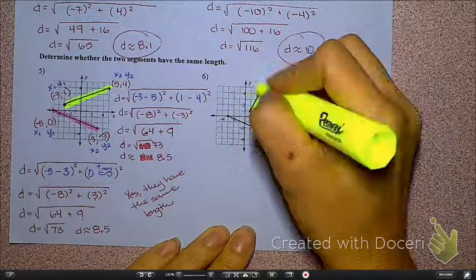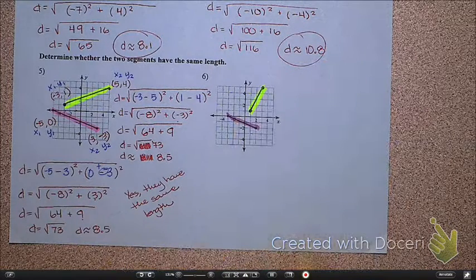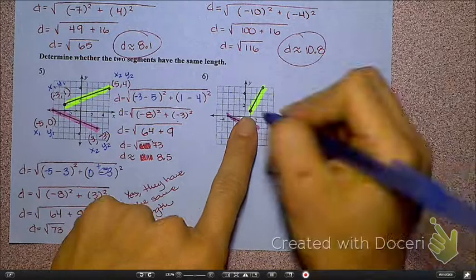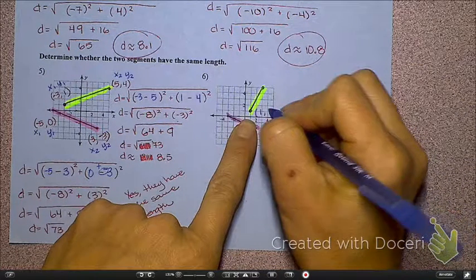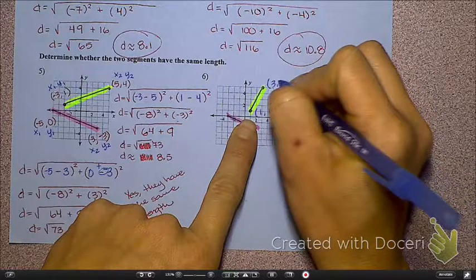So that one's going to be the yellow line, and this one's going to be the pink line. I'm going to start out by finding the length of the yellow line, so I'm going to label its points. So this is 1, 1, and this one is 3, 5. Did you guys label it correctly?